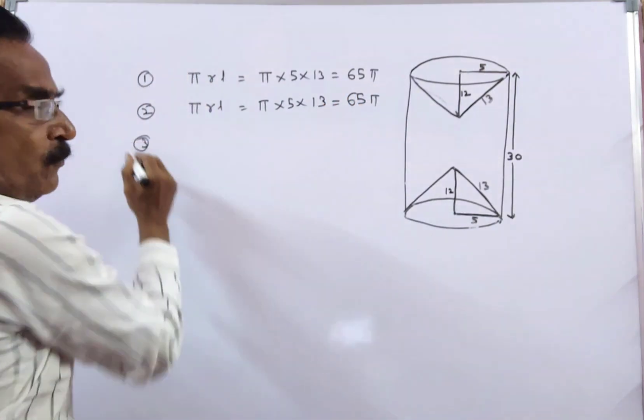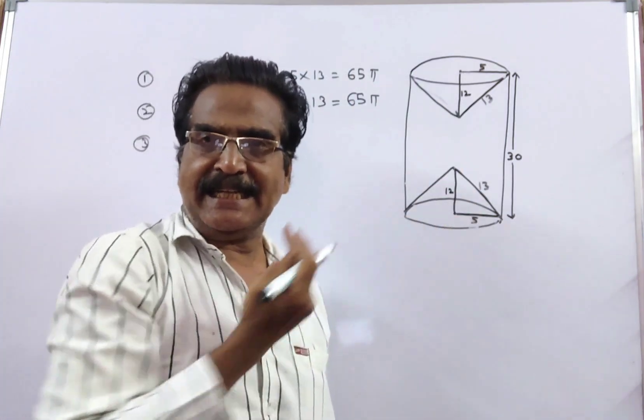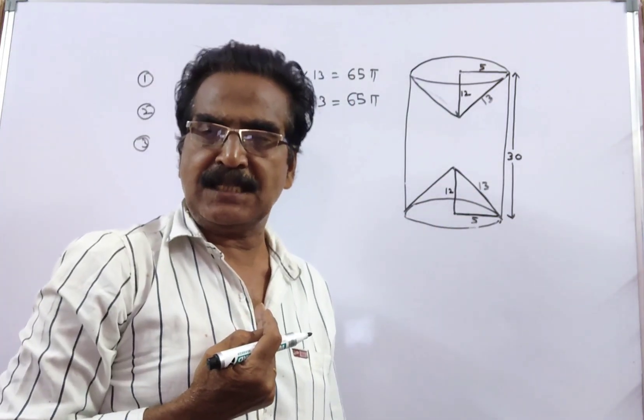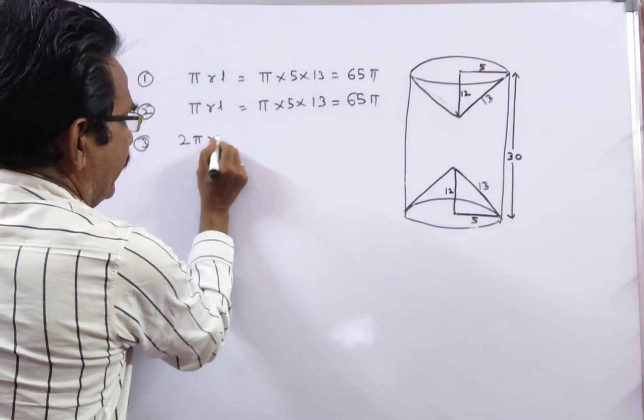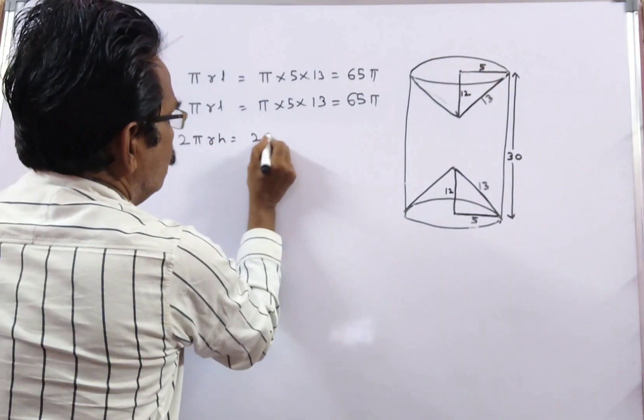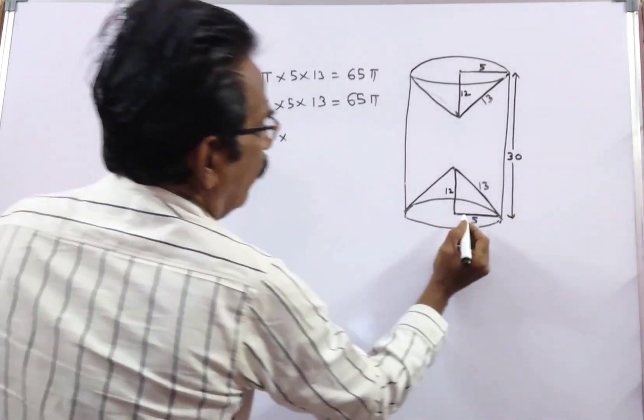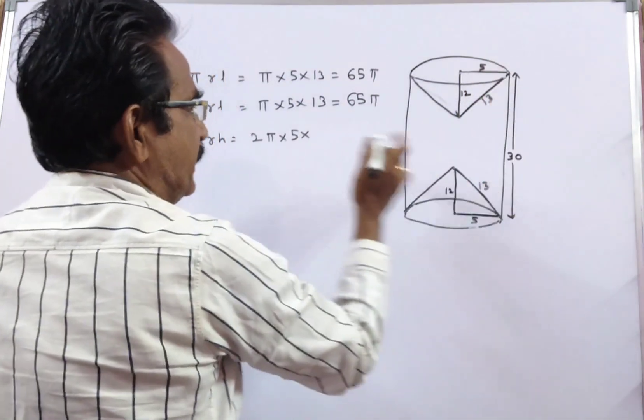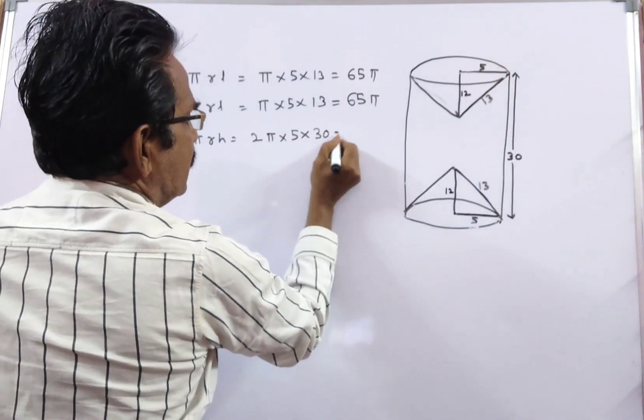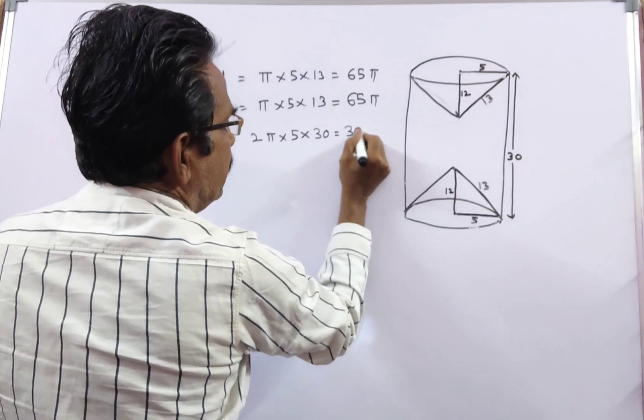Now the curved surface area of the cylinder. Look at the cylinder, the curved surface area of the cylinder is 2 pi r h. That is equal to 2 pi into radius 5 centimeters into height 30 centimeters. This is equal to 300 pi.